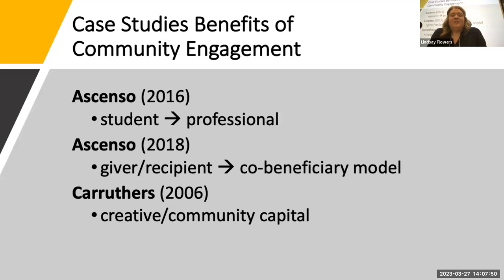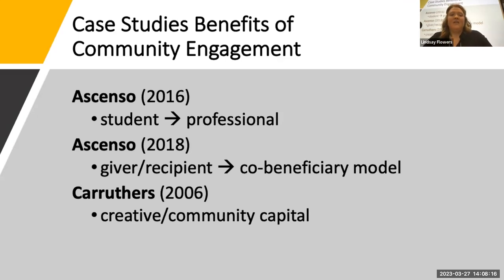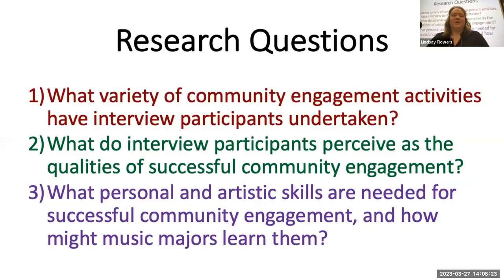These were research findings of Sarah Senso. She talked about the transition from the music student to the professional musician — that's one of the hardest points in life, and how do we make that transition from student to professional. And then how do we make that co-beneficiary model — connecting in a way that is not giver-receiver but mutual benefit — and that is what creates creative community capital, which will have benefit for all.